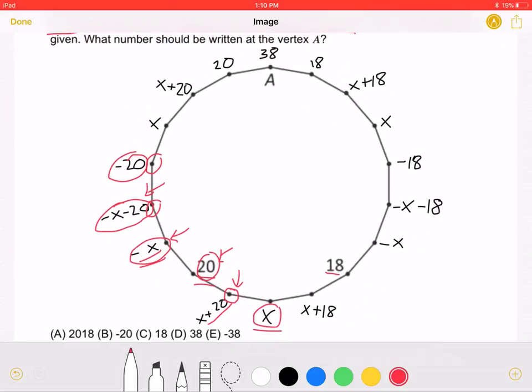Using the same logic, we can find that this vertex is X, this one is X + 20, and this one is 20.